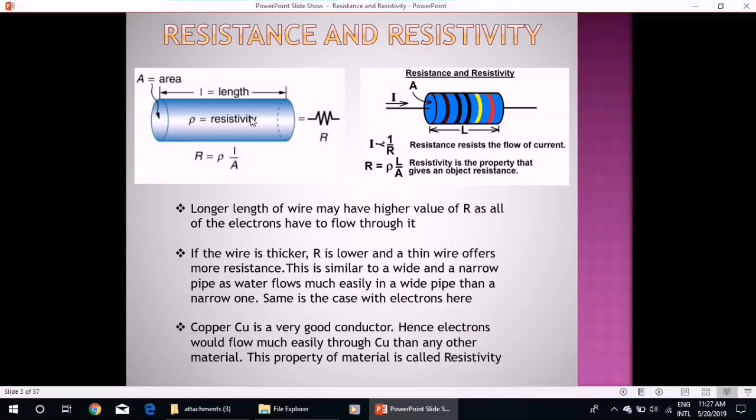Secondly, considering this area of cross-section, if the wire is thicker, it means area of cross-section will be more, R is lower because both are inversely proportional to each other. A thin wire offers more resistance. This is similar to a wide and a narrow pipe, as water flows much easily in a wide pipe than a narrow one. Same is the case with electrons here.